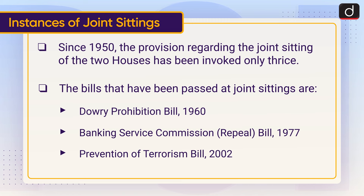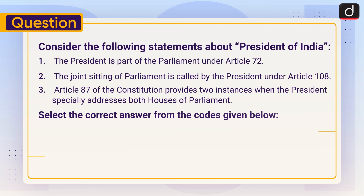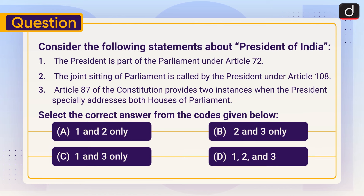Now it is time for a practice question. Consider the following statements about the President of India: One — the President is part of the parliament under Article 79. Two — the joint sitting of parliament is called by the President under Article 108. Three — Article 87 of the constitution provides two instances when the President specially addresses both houses of parliament. Select the correct answer: (a) one and two only, (b) two and three only, (c) one and three only, or (d) one, two and three. Send the answer in the comment section. Stay tuned for the next episode, thanks for watching, have a great day.